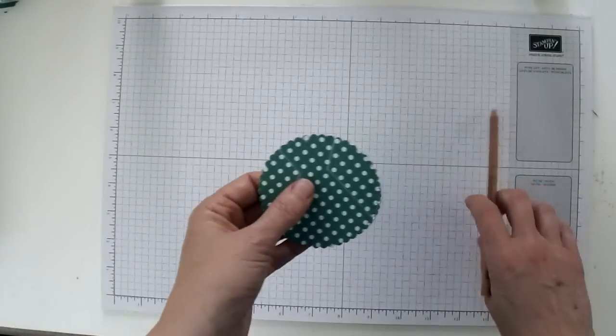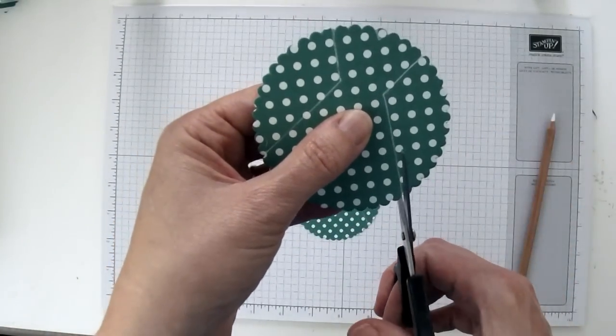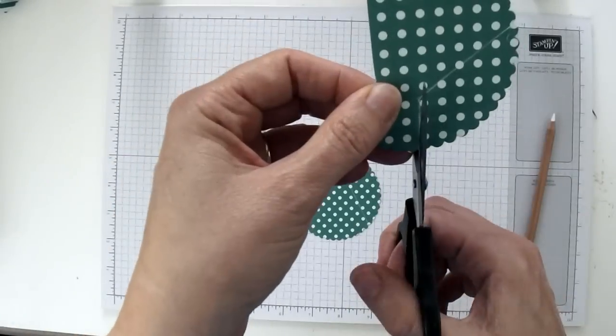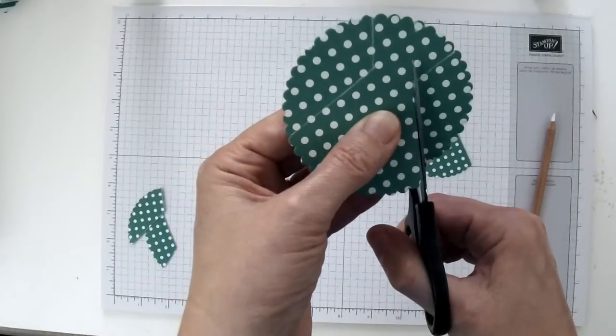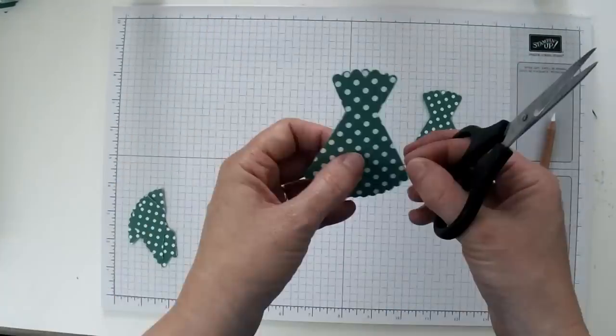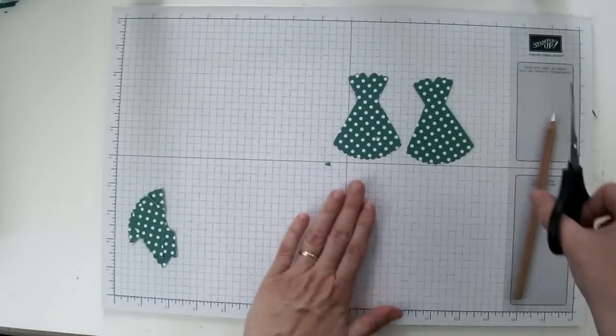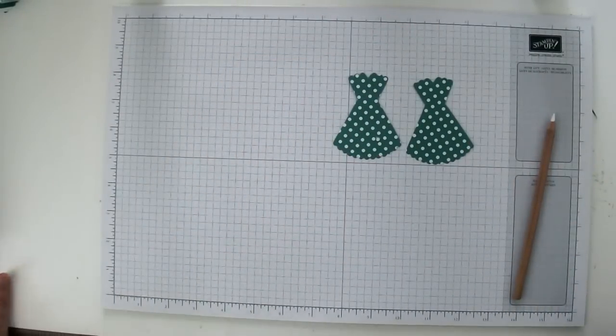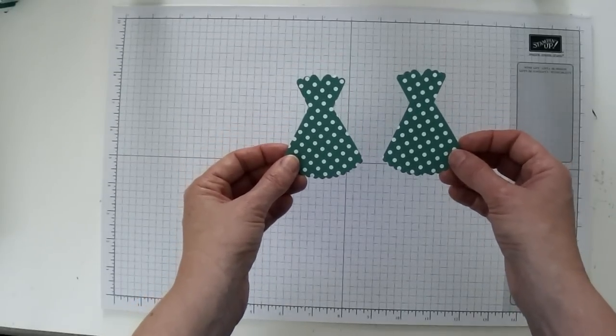So we're done with the template and now all we need to do is just cut out our dress. And there you go. Both of the dresses are cut out and you can get rid of the scraps and then you can set these aside for later once you have your box completed.